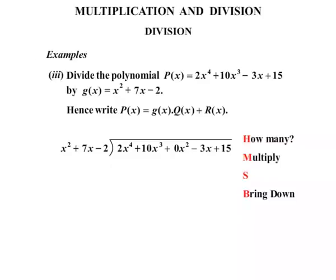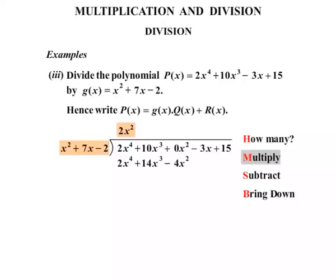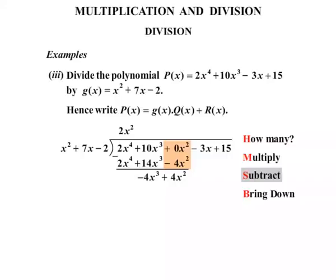Now what we're dividing by is x squared plus 7x minus 2. HMS bring down: how many, multiply, subtract and bring down. How many times does our leading term x squared divide into 2x to the 4? That happens 2x squared times. We multiply 2x squared by the whole expression, ending up with 2x to the 4 plus 14x cubed minus 4x squared. Then we subtract: 2x to the 4 take away itself is gone. 10x cubed minus 14x cubed gives minus 4x cubed. Then 0x squared minus minus 4x squared gives plus 4x squared. We bring down the next term, minus 3x.